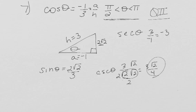Next we can find our tangent. Tangent of theta is y over x, or opposite over adjacent, so two root two over negative one just gives us negative two root two.